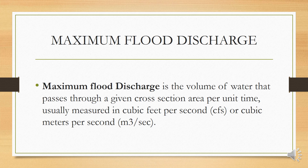Maximum flood discharge is the volume of water that passes through a given cross-section area per unit time. It is usually measured in cubic feet per second (CFS) or cubic meter per second. Maximum flood discharge means, if there is a flood in the area, the capacity of how much water it can discharge — this is the maximum value of water.